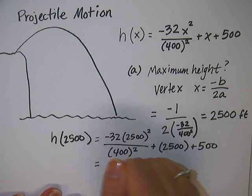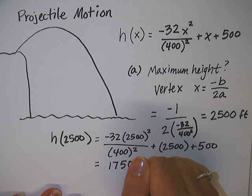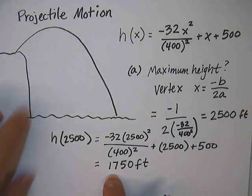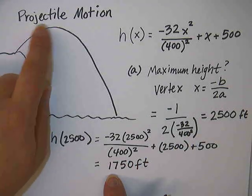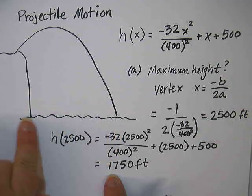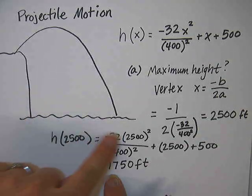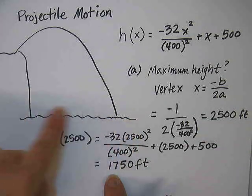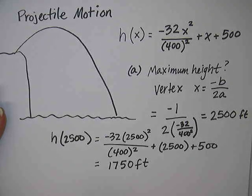So then our calculator gives us the answer, 1,750 feet. So that's how high in the air Jack gets to before he starts flying back down. Now this is above the surface of the water because this is like our x-axis down here.